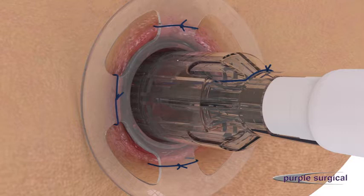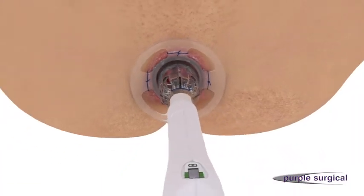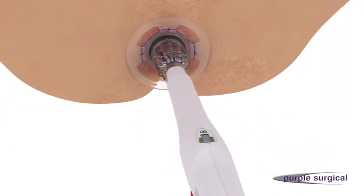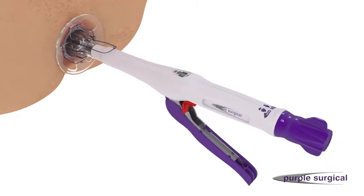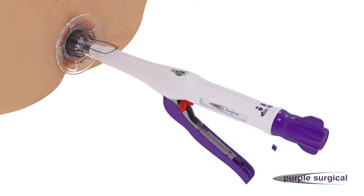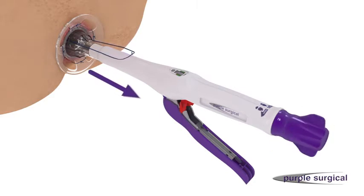Ensure the ultimate hemorrhoidal circular stapler is aligned along the axis of the rectum. Introduce the transparent cartridge into the anal canal and partially close the device by turning the wingnut clockwise whilst gently pulling on the sutures to draw the prolapsed mucosa into the stapler housing.